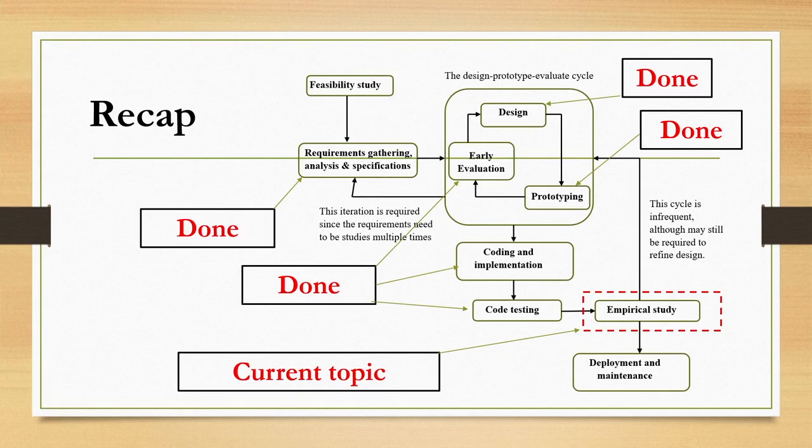For usability, we go to the next stage: empirical study. Currently we are discussing empirical study. In the previous lecture, we talked about a few basic concepts and started our discussion on different stages of empirical study. We have already noted why we need empirical study to understand usability of the end product. During the design-prototype-evaluate cycle, we talked about usability evaluation, but that was on a limited scale done by expert users on prototypes. That does not reveal everything about usability issues as compared to getting it evaluated with actual end users.